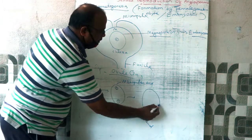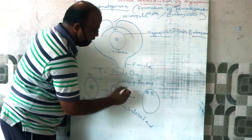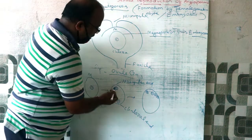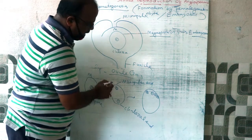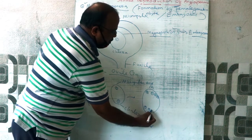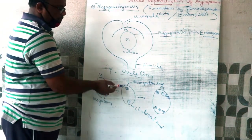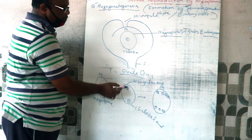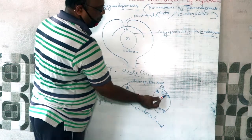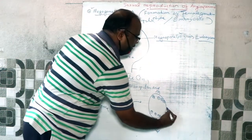On further development, each nucleus at both ends further divides twice by mitosis to form four haploid nuclei. This results in four haploid nuclei at the micropylar end and four haploid nuclei at the chalazal end, giving a total of eight nuclei.